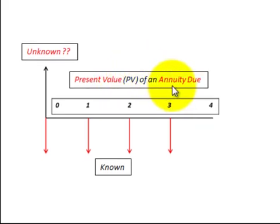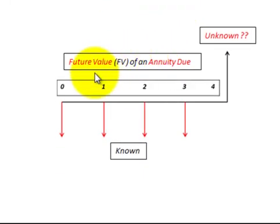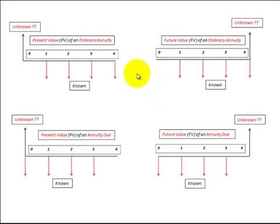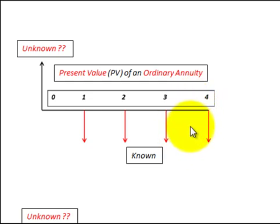For the present value of an annuity due, payments are at the beginning of each period and discounted back to determine their present value. For the future value of an ordinary annuity, payments are at the end of each period and discounted forward to determine their future value. For the future value of an annuity due, payments are at the beginning of each period and discounted forward. When solving these problems, you must identify whether payments are at the beginning or end of each period, know the amount, the interest rate, and the timing.